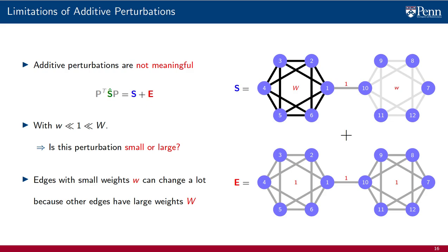Herein lies the problem with arbitrary additive perturbations. Edges with small weights can change a lot, because some other edges of the graph have large weights. In this example, the norm of the error matrix E is much smaller than the norm of the shift operator S. But this doesn't mean that the perturbation is small in any meaningful sense. The nature of the graph has changed.